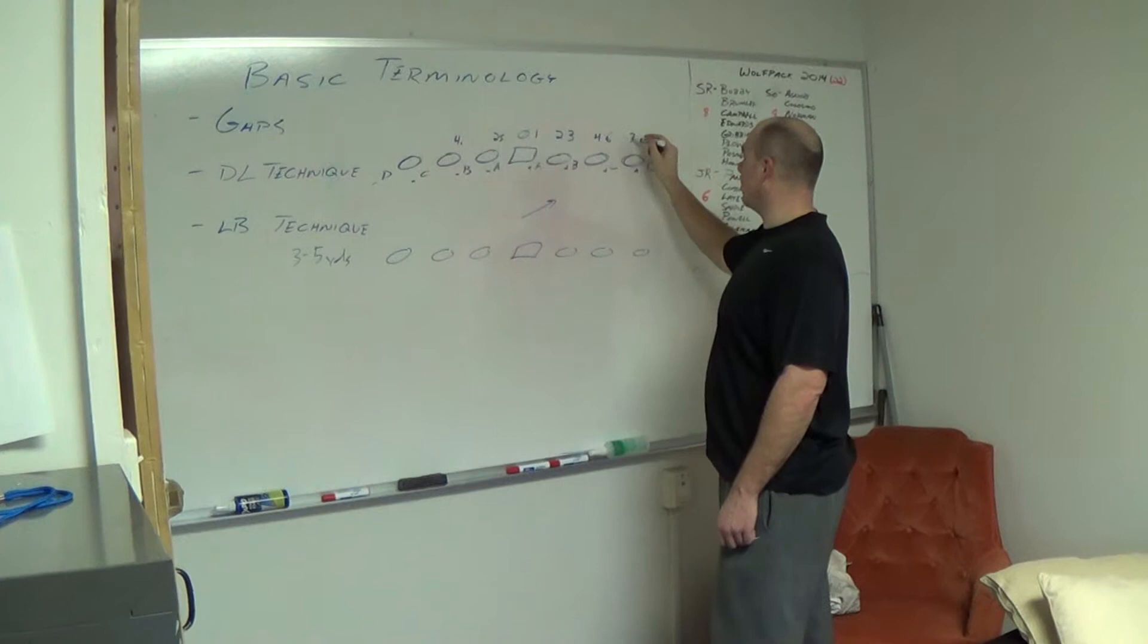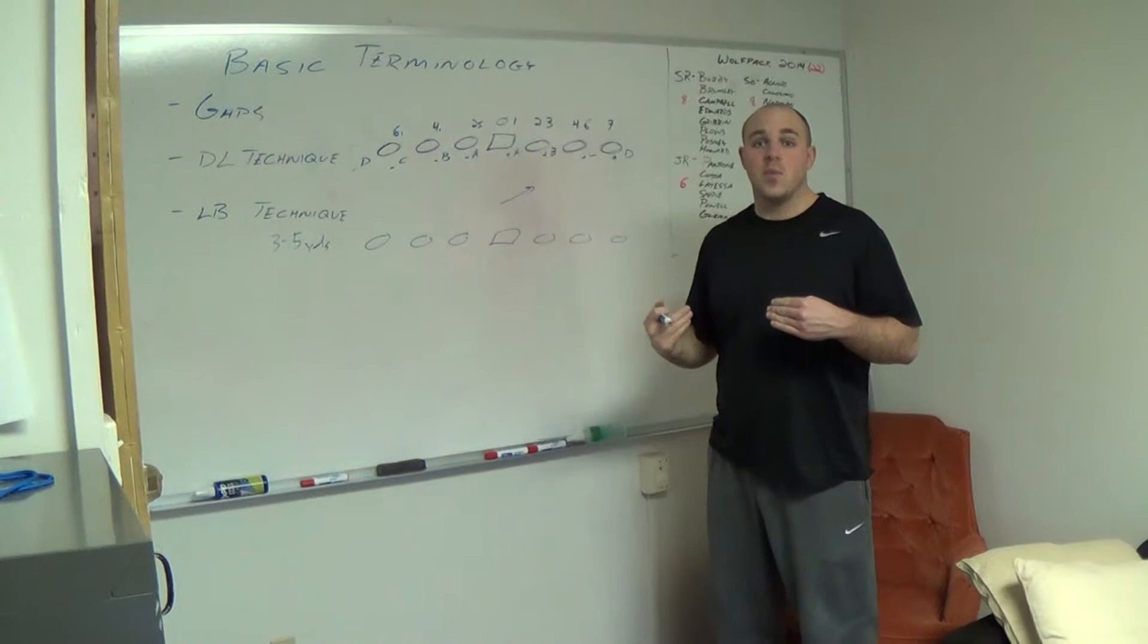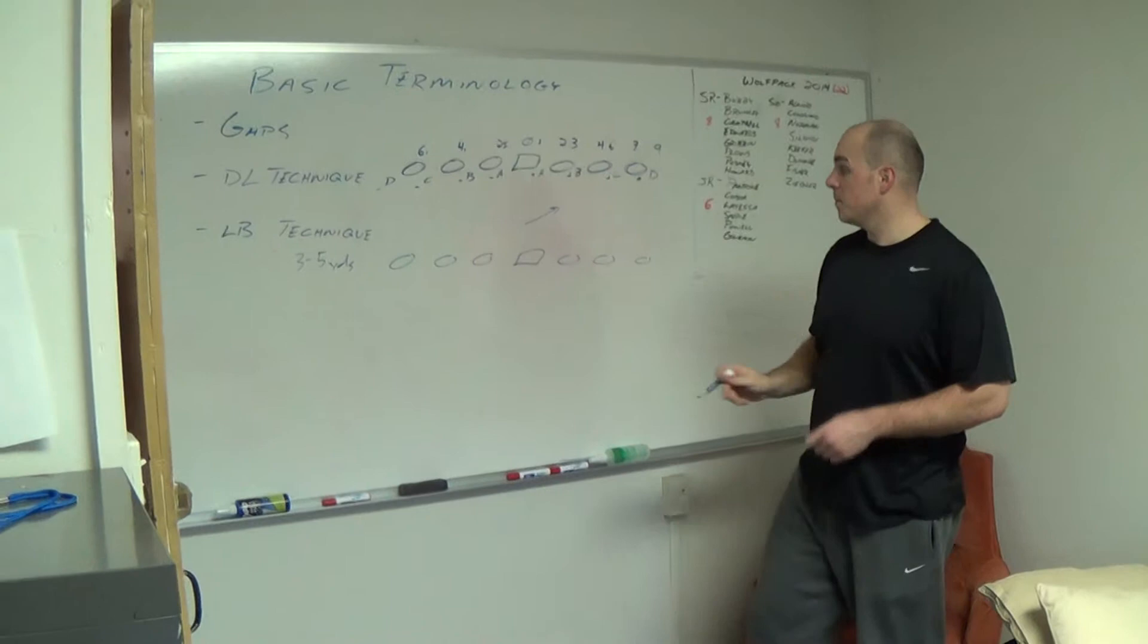Head up on a tight end is called a seven technique. Inside shade, however, is a six eye going with the pattern. And anything outside a tight end as a down on the ball defender is known as a nine technique.